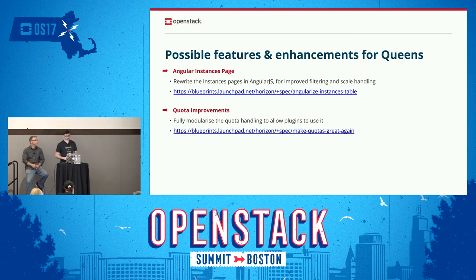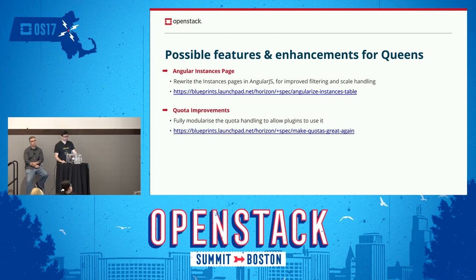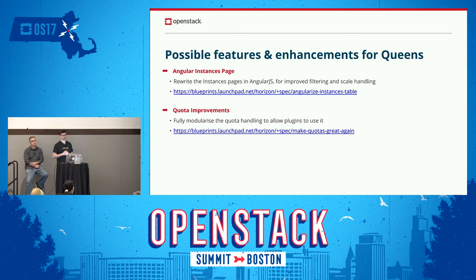Finally, we want to continue the quota work and make it completely pluggable. One thing we've been asked for a lot, especially by other networking services like Octavia, is to allow them to have quota hooks — so that if we have overview pages showing all your quotas, they want to be able to hook into that and produce graphs relatively simply without having to hack the Python code behind it.